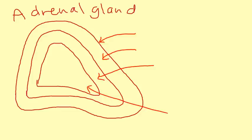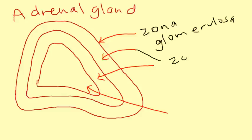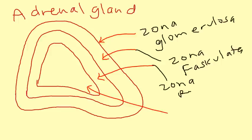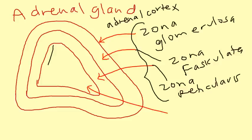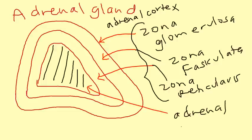The outermost layer is known as the zona glomerulosa. The next part is known as the zona fasciculata. And then the next part is the zona reticularis. These three together comprise the adrenal cortex. The final, innermost portion is called the adrenal medulla — M for middle, M for medulla.